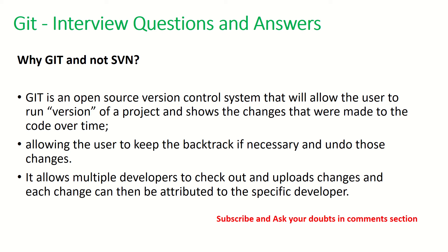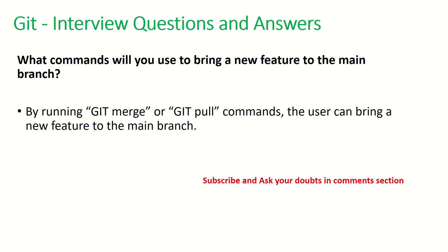Why Git and not SVN? Git is an open source version control system. Git is more controlled, has many more features, and is more advanced than SVN. It is also much better in terms of how you can adapt it across different projects in your company. That is why Git is preferred over SVN, which stands for Subversion.